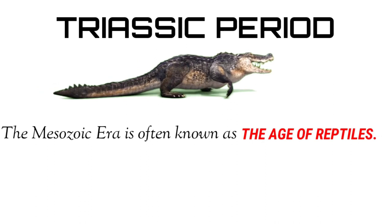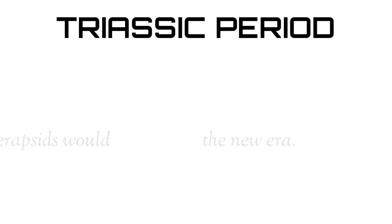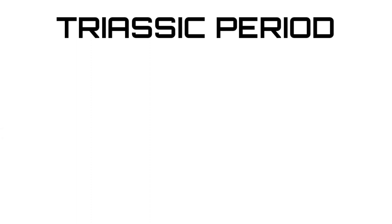The Mesozoic era is often known as the age of reptiles. Two groups of animals survived the Permian extinction: the therapsids, which were mammal-like reptiles, and the more reptilian Archosaurs. In the early Triassic, it appeared that the therapsids would dominate the new era. However, by the mid-Triassic, most of the therapsids had gone extinct, and the more reptilian Archosaurs were clearly dominant.